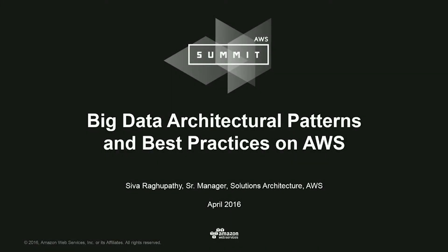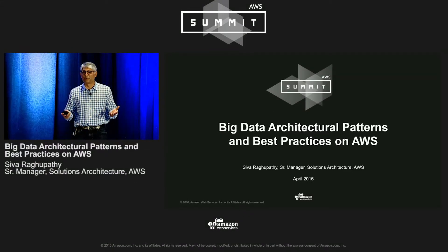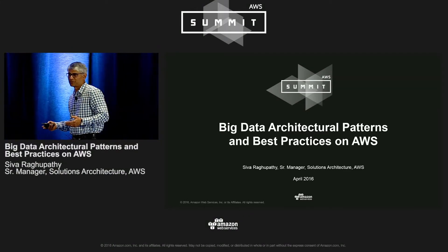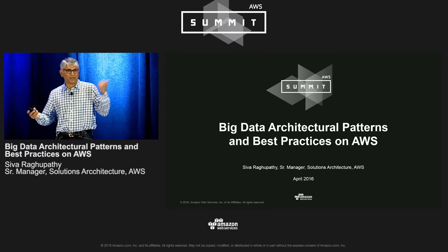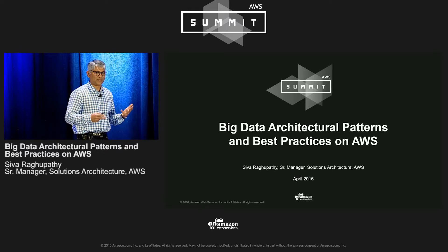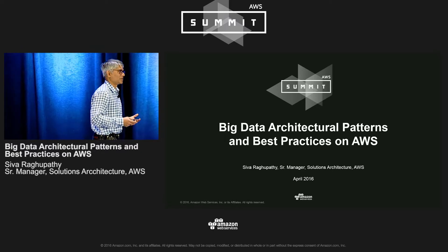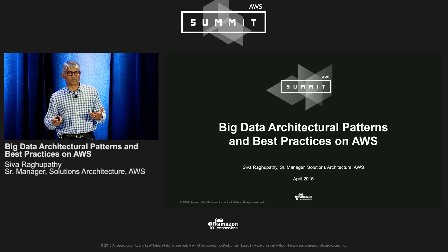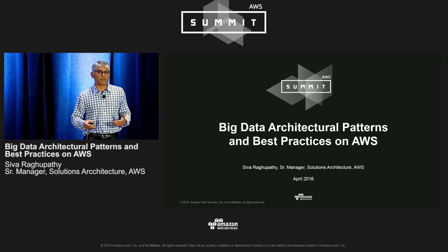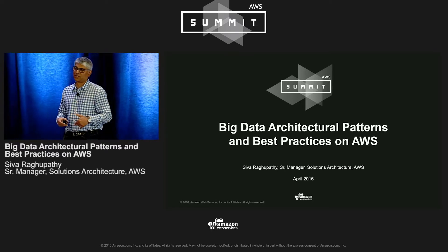My name is Siva Ragupati. Just a bit of introduction about myself. I've been with AWS for about seven years. The first three years I helped build a couple of services: Amazon DynamoDB, which is a NoSQL database service, and Amazon RDS, which is a relational database service. For the last four years I've been working with customers, including Amazon.com, helping them build big data solutions on AWS. I lead our big data solutions architecture team for Americas.